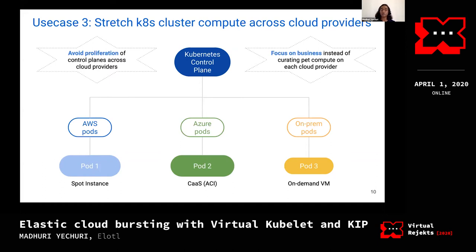Different cloud providers will bring better and cheaper instances and launch types to market at a very high cadence. So instead of focusing on your core business, you'd end up hand-curating compute across various cloud providers and managing hundreds of control planes. It would be nice to have just one control plane or a small number of control planes and be able to schedule your pods across various cloud providers.